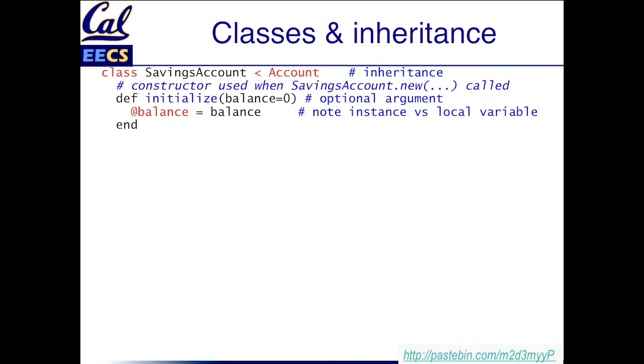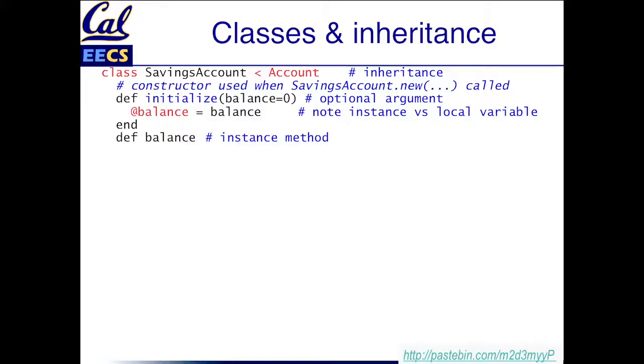That's the only thing the constructor does, and now we have an instance variable — in Java terminology — to track the value of our account balance. But we need to be able to get access to that, and unlike Java and some other languages there's no notion of a public attribute. This instance variable @balance is visible only from within this specific instance of the object. So if somebody outside the object wants to get access to that information, you have to define an accessor for it.